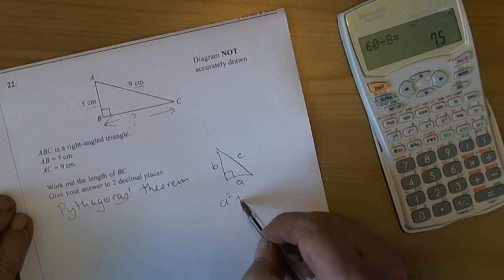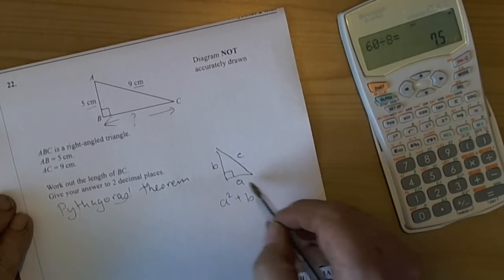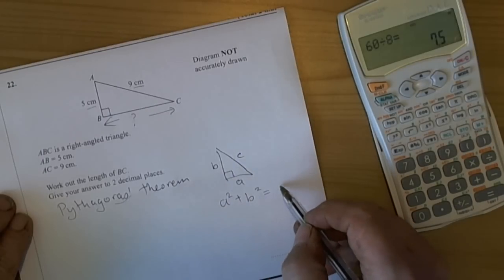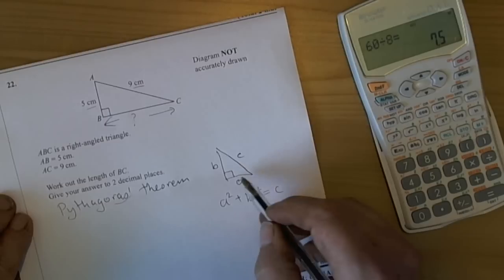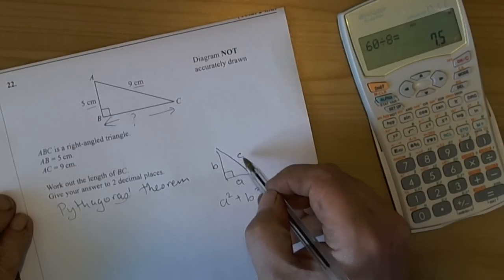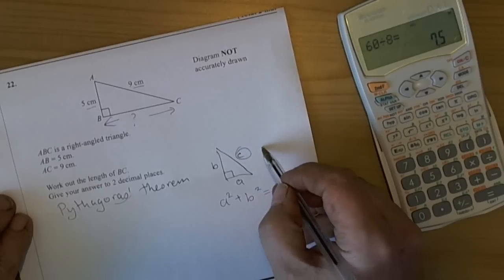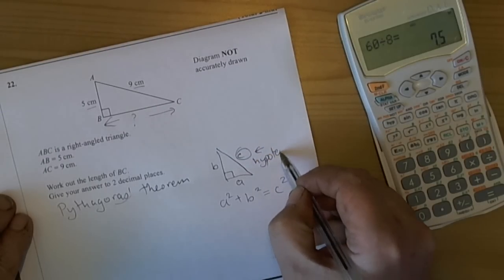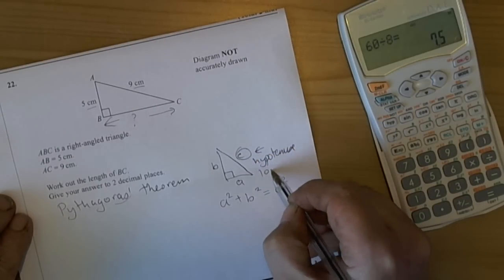So the theorem says that the square of the A side plus the square of the B side must equal the length of C squared as well. So the two little squares added together give you the answer for the big side squared. Now it's really important that you recognize where C is. C is always the hypotenuse, the longest side.